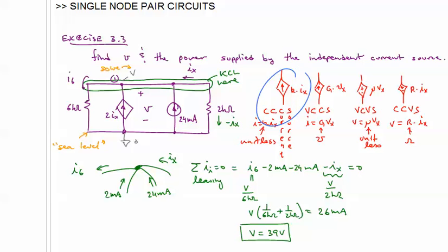So how do we modify our KCL equation? Well, we're going to modify it by getting rid of this here. And instead of having minus 2 milliamps, we're going to have minus 2 times IX.